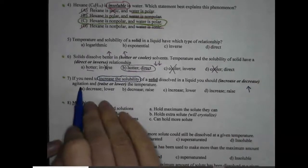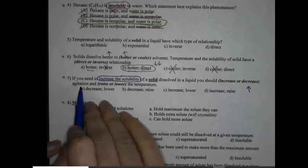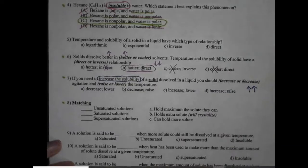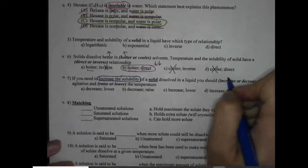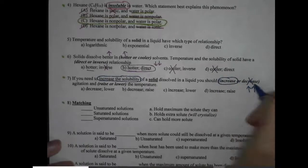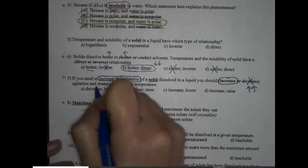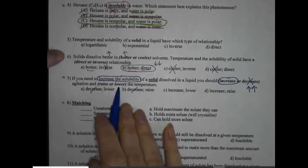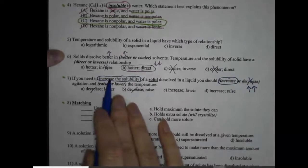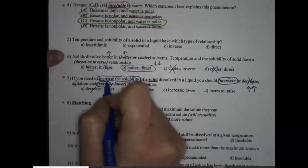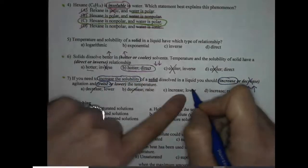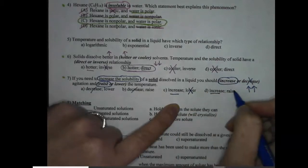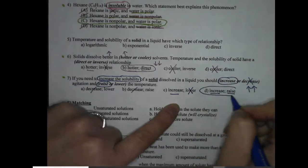What should we do to agitation, which is our nerdy word for stirring? We should stir it more. Stirring makes it dissolve better, so I want to increase agitation, which means I'm going to take out those two answer choices. And do what to the temperature? We talked about that here. Higher temperature will increase the solubility, so the hotter it is, the better it will dissolve. So I want to increase, but I don't want to lower the temperature. Let's increase stirring and raise the temperature. D.